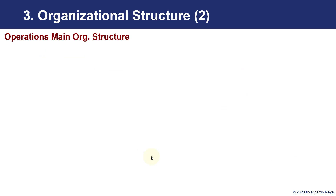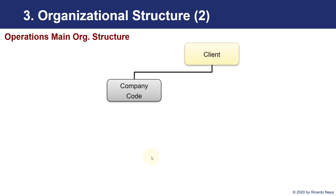Now we are going to talk about the main operations organizational structure. First of all, we have a client that is going to cover all the data we have in our implementation, and where we can have one or different company codes. The company code is the organization for which we need to create external reporting to the main authorities — for instance, for each country we might need a different company code, because we need to report our statements and taxes to the authorities of that country.